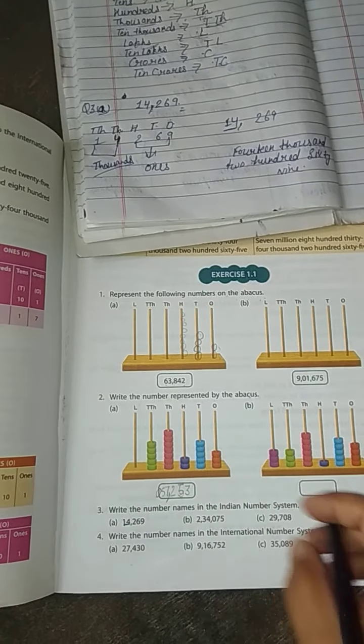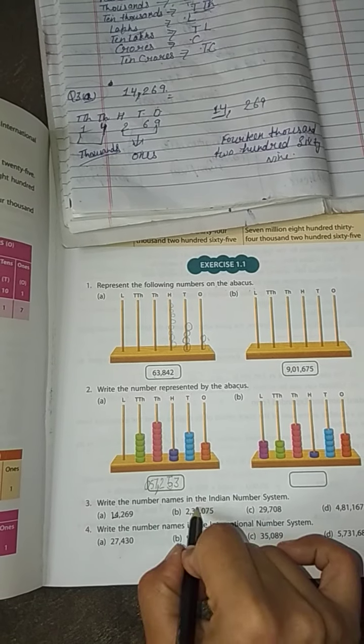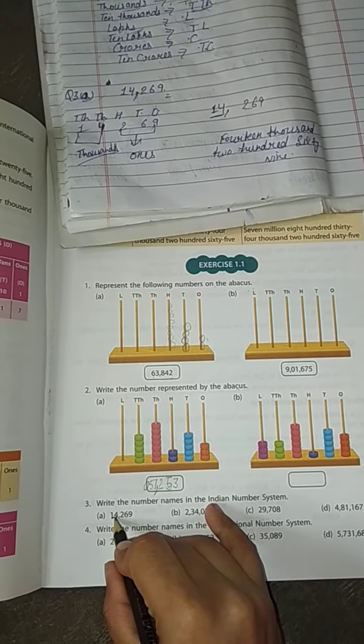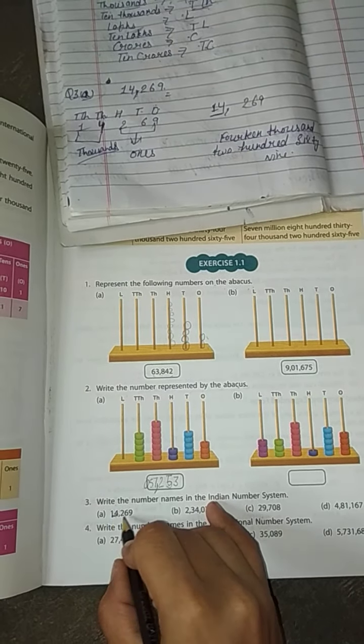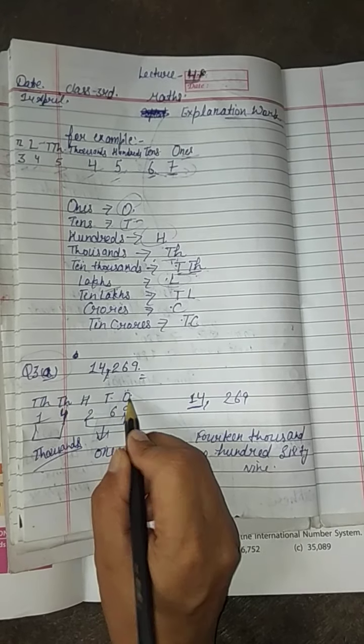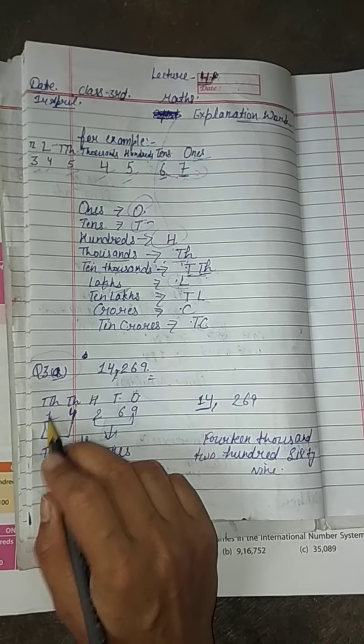And now write the number names in the Indian number system. Fourteen thousand two hundred sixty nine. We can see, one four two six nine. Nine ones, six tens, two hundreds, four thousands, one ten thousand.